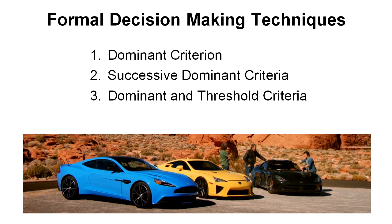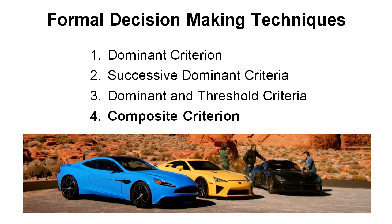The third method is the dominant and threshold criteria. In this technique we increase our specifications a little bit higher — we lift the threshold of acceptability so that we eliminate some of the options, and then we select on the dominant. The final option is the composite criterion method. We multiply our weightings for each criterion by the scores given based on the values for those specifications, and compare concepts on that sum to figure out which is best and whether it is significantly better than the others.